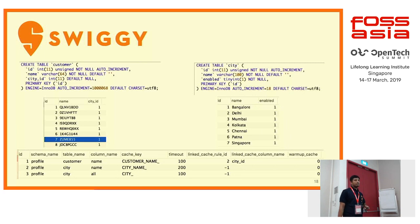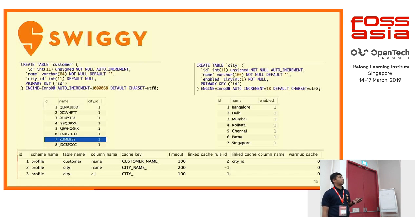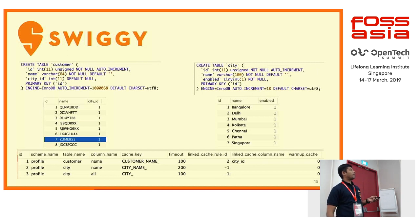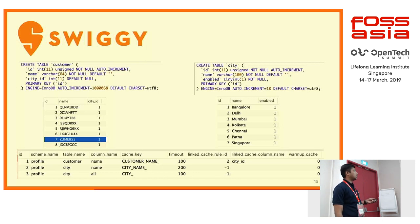Taking an example: there is a customer table and a city table. Caching rules are added in the caching table. For schema 'profile' and table 'customer', the rule caches the name column with cache key 'customer_name' and a timeout of 100. There is a linked cache rule 2, which for the 'profile' schema and 'city' table caches the city name with cache key 'city_name' and a timeout of 200.